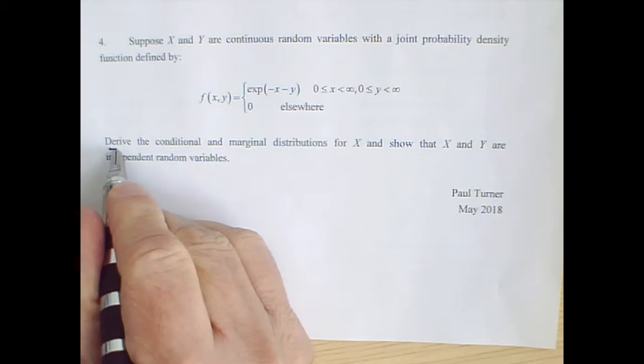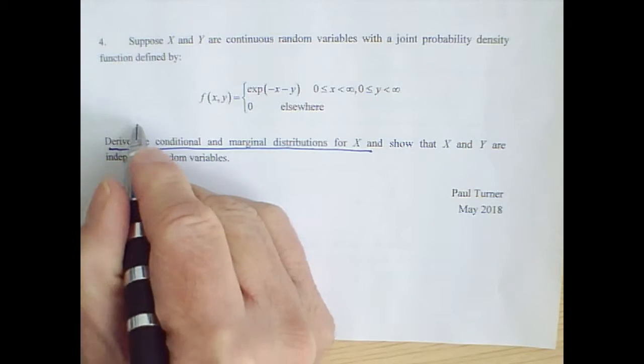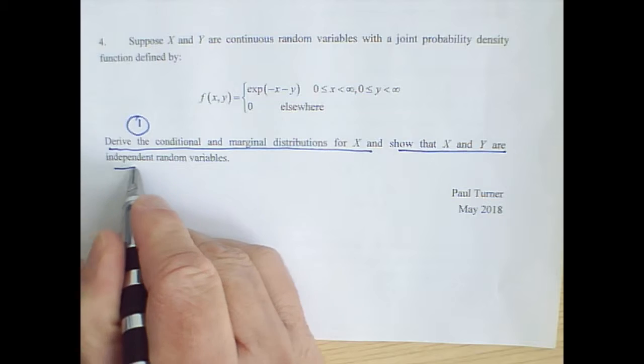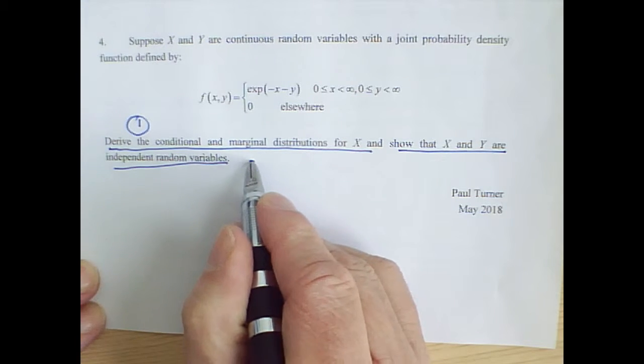In this exercise we have continuous bivariate random variables. There are two parts: first we want to derive the conditional and marginal distributions for x, and secondly we want to show that x and y are independent.